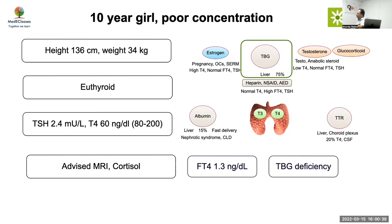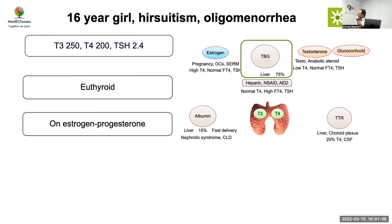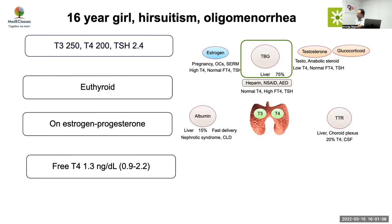A 16-year-old girl with hirsutism and oligomenorrhea had high T3, high T4, but normal TSH — this might superficially suggest a TSH-producing adenoma. However, history revealed estrogen/progesterone use, and FT4 was normal — so this is TBG excess causing elevated total T3 and T4, not a TSH-secreting tumor.